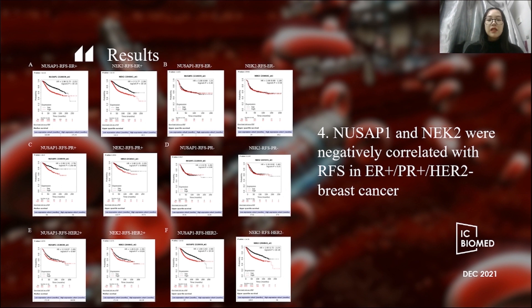Then, we analyze the prognosis of NASAP1 and NASAP2 for different types of breast cancer. For the analysis of prognosis of different staging of breast cancer, we analyze the prognosis of RFS, which has a strong correlation with NASAP1 and NASAP2.